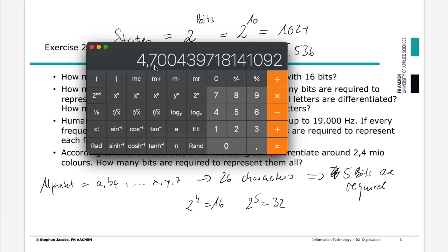But as I can't have, let's say, 0.7 bits, I can't just have 4 bits or 5 bits or 6 bits. It's always a complete number. It's an integer. Then we have to go to the next higher integer, which in this case is 5.